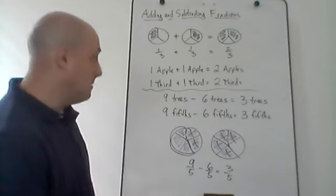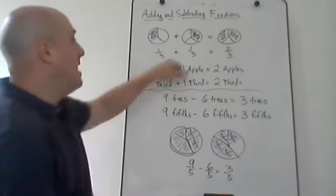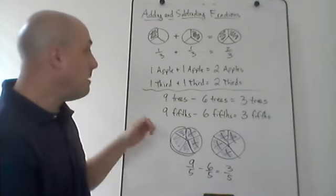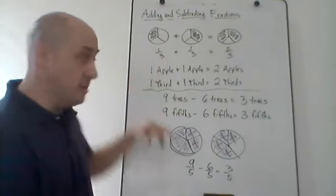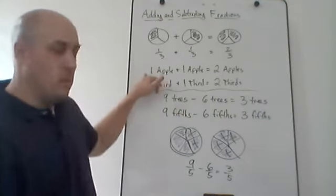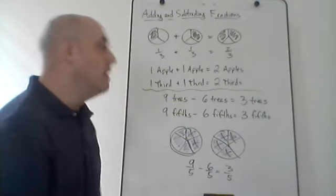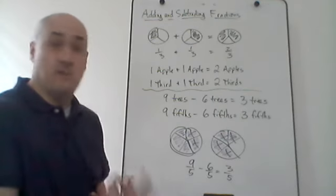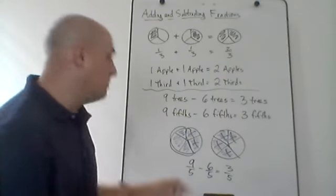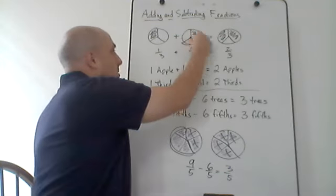We can see from these first couple of examples that when we're adding and subtracting fractions, if those fractions have common denominators — if that bottom number is the same — then we just add or subtract the numerators. One-third plus one-third equals two-thirds, just like one apple plus one apple equals two apples. We're adding the same things together, so we just add up however many of them we have.